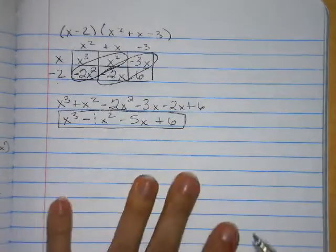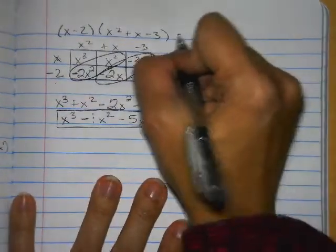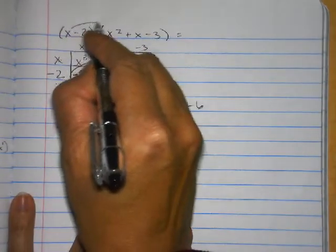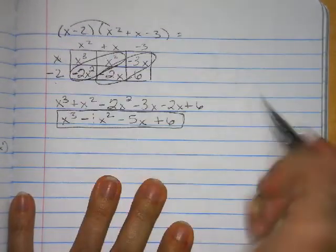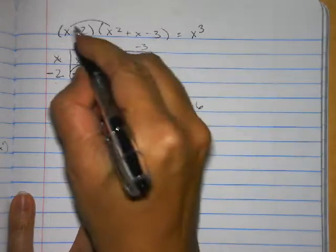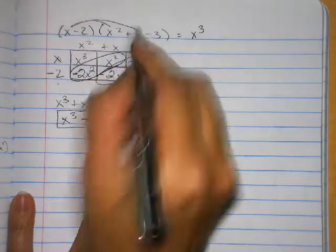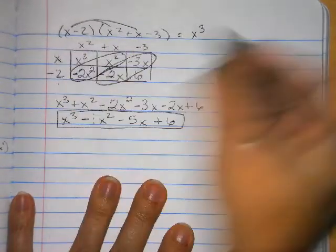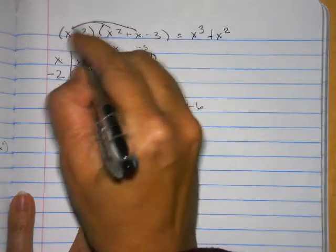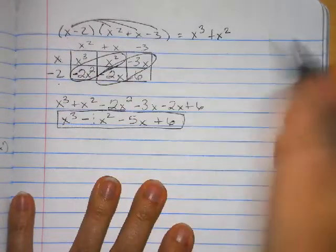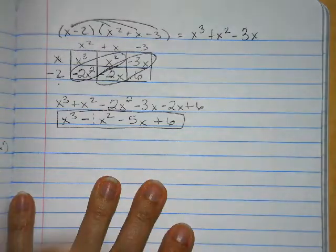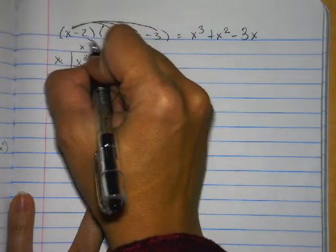If you chose to do FOIL, same thing. First terms: x times x squared is x cubed. You're going to do that all the way through. Then x times x is x squared. x times negative 3 is negative 3x. And then your second term: negative 2 times x squared is negative 2x squared.